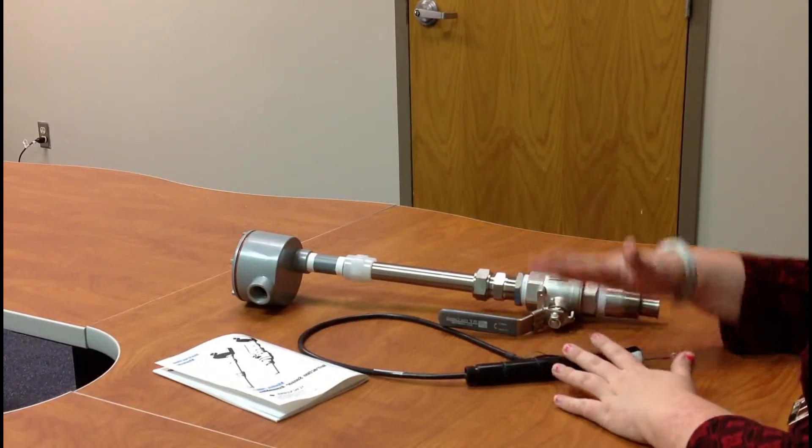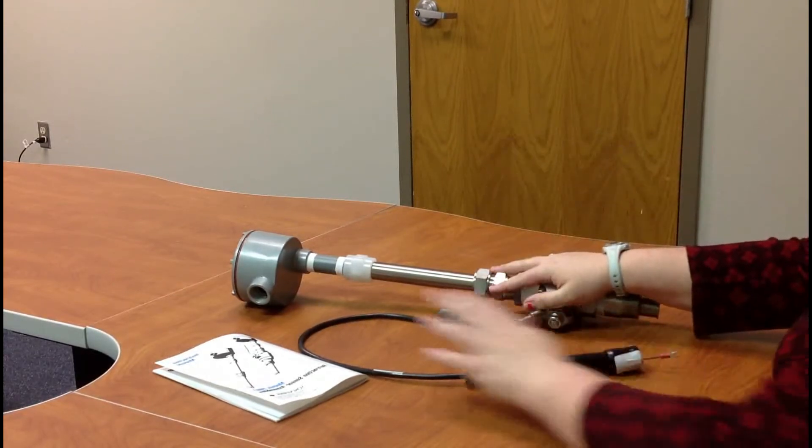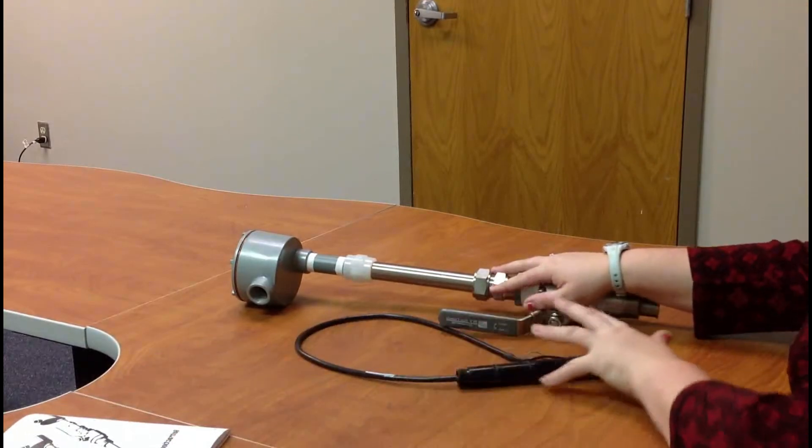So you need to take everything out of this box. You got your 87, it comes with the instruction manual. Your 97 comes with an instruction manual as well.